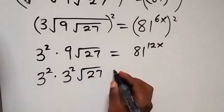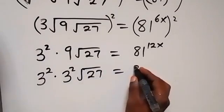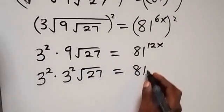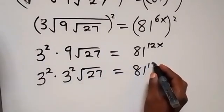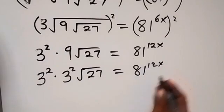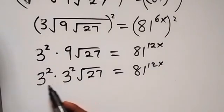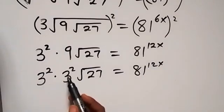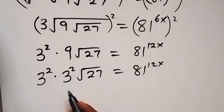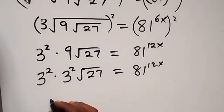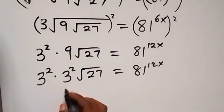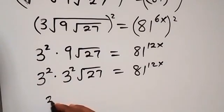From here, we apply the law of indices and we can write this as 3 raised to power 2 plus 3 raised to power 3, so we combine the powers on the left side with the same base.